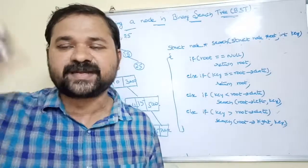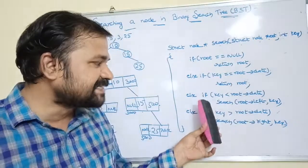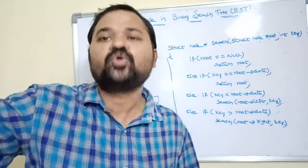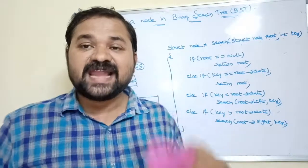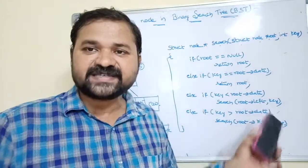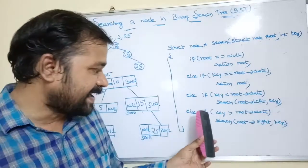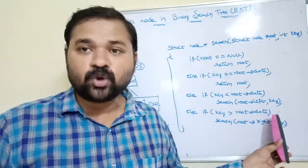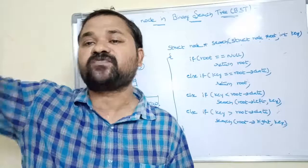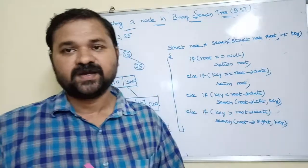Otherwise, else if key == root->data, we return root because we are returning the address of the found node. Next, else if key < root->data, we search in the left part by calling search(root->left, key). Else if key > root->data, we search the right part by calling search(root->right, key).